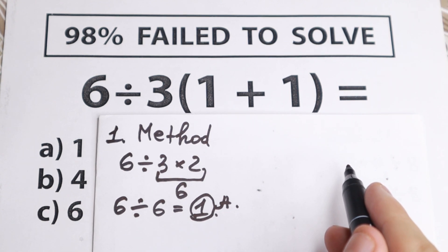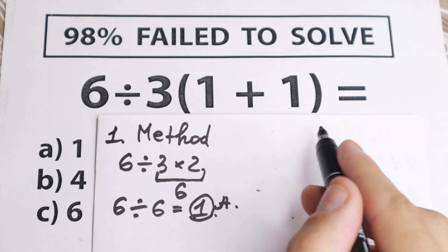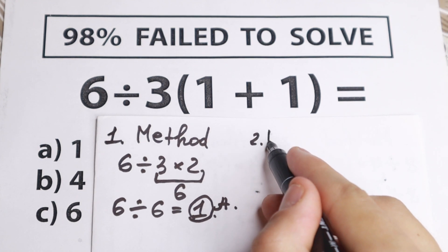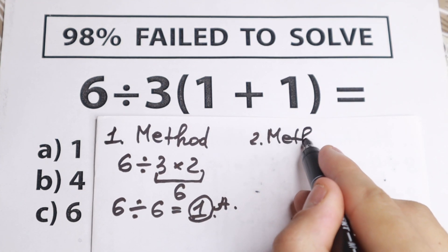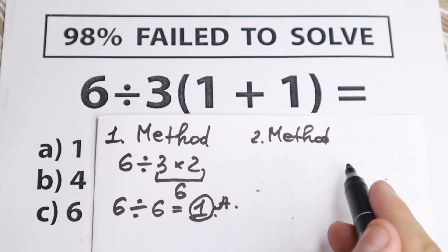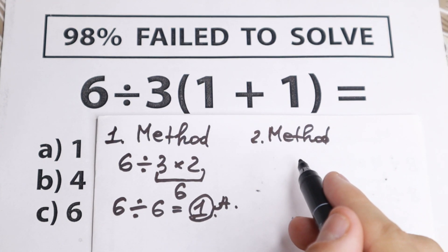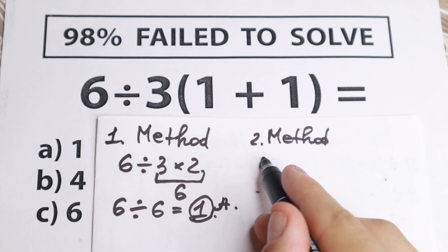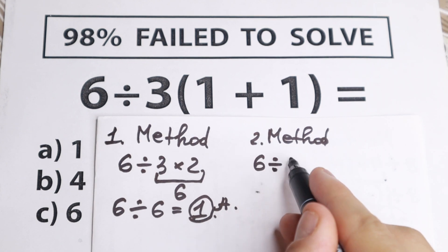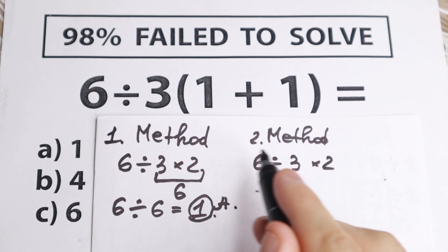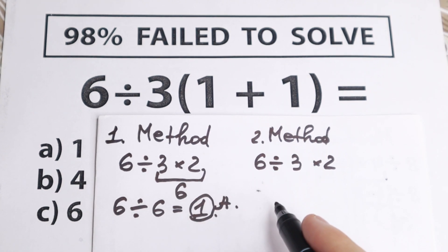But moreover, if we go a little bit in another order right here, so the second method, take a look closely. We have the second method. Of course we need to start with parentheses, every time right here we need to start with parentheses. We have 6, dividing by 3, and multiplying by 2. As you can see the same situation as right here in the first method.